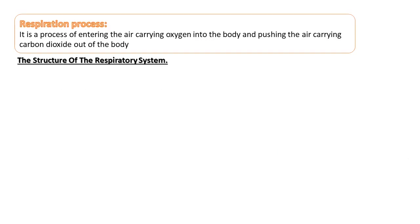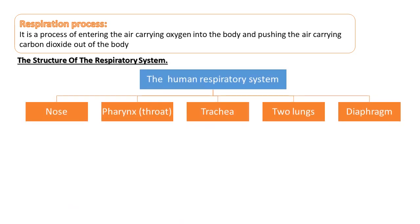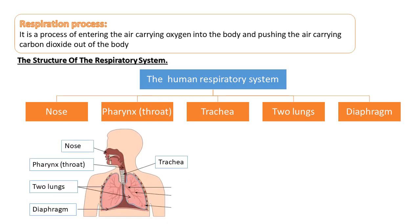The respiratory system supplies the body with oxygen gas and gets rid of carbon dioxide gas through the respiration process. The respiration process is the process of entering air carrying oxygen into the body and pushing air carrying carbon dioxide out of the body. The respiratory system consists of the nose, pharynx or throat, trachea, two lungs and diaphragm.